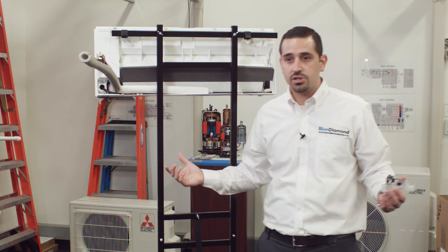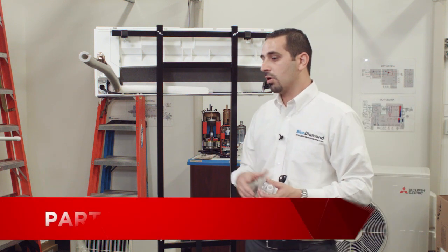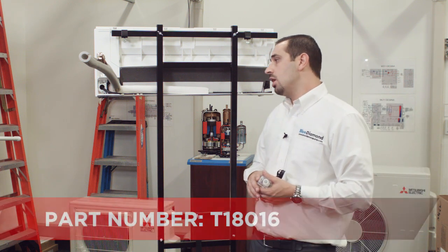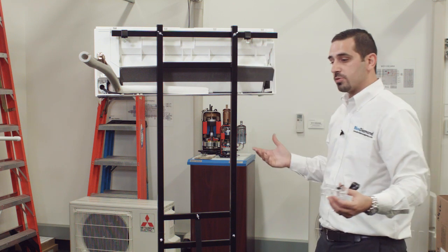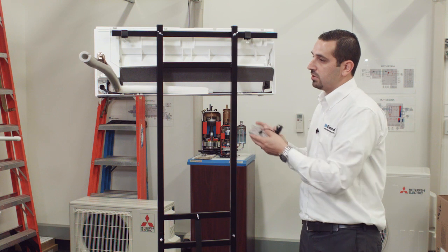which is another product that Mitsubishi sells, part number T18016. You also could leave the reservoir back here and put the pump elsewhere. In this particular video, we're going to show you fitting everything right here in the back side of the unit.